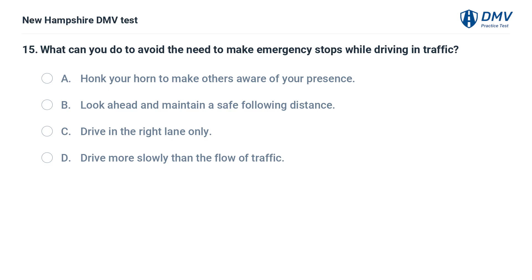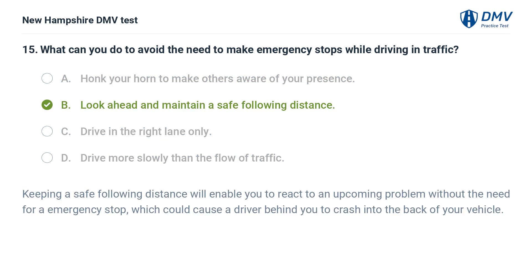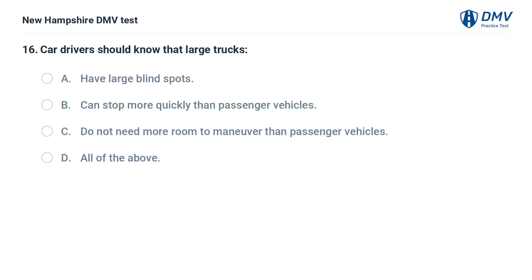What can you do to avoid the need to make emergency stops while driving in traffic? A) honk your horn to make others aware of your presence, B) look ahead and maintain a safe following distance, C) drive in the right lane only, D) drive more slowly than the flow of traffic. The answer is B. Keeping a safe following distance will enable you to react to an upcoming problem without the need for an emergency stop, which could cause a driver behind you to crash into the back of your vehicle.